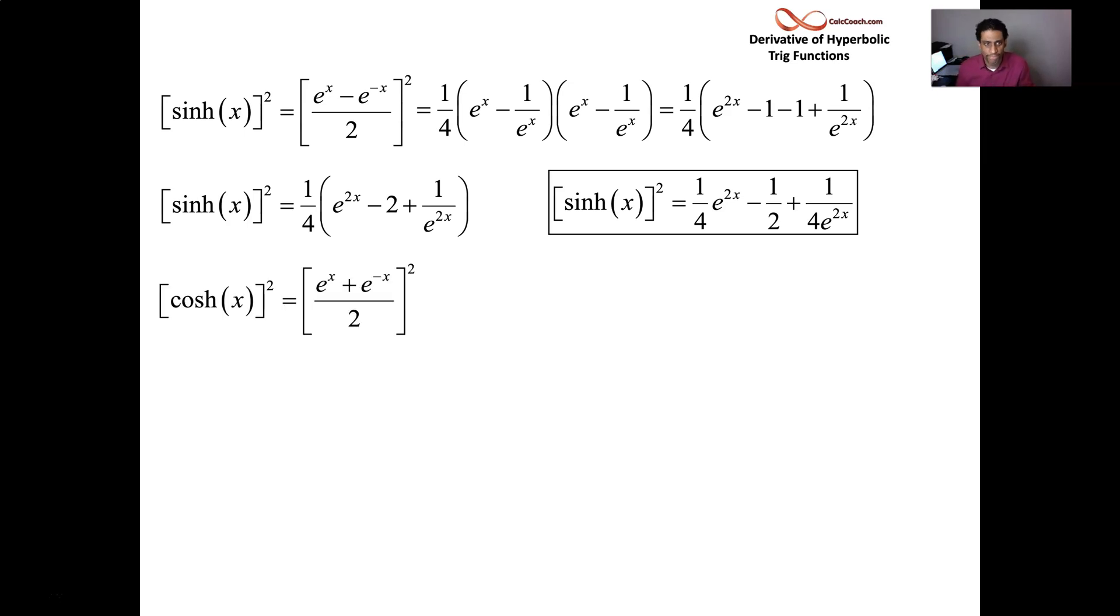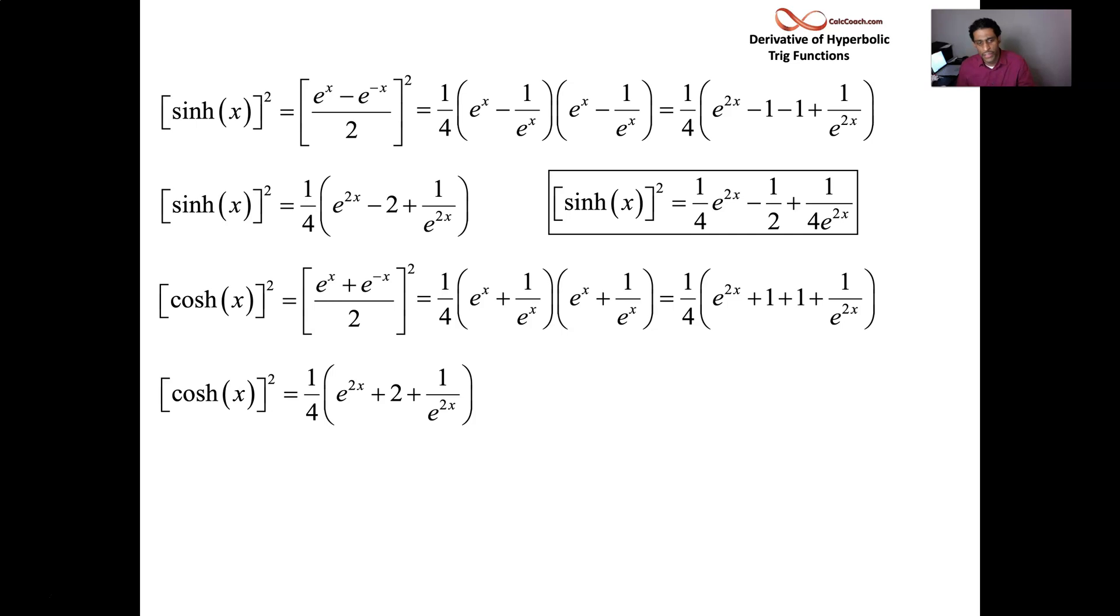Let's look at hyperbolic cosine squared. Same action, but with the plus sign now. So with the plus 2 on the inside now, the e to the 2x and 1 over e to the 2x, they stay the same. Put the 1 fourth in, and that's an expression for hyperbolic cosine squared.